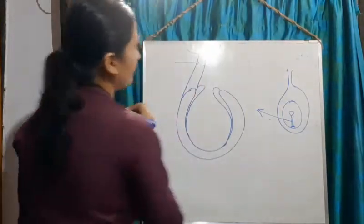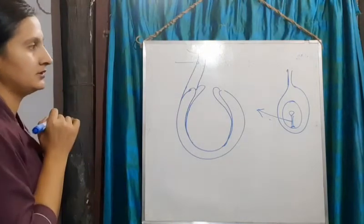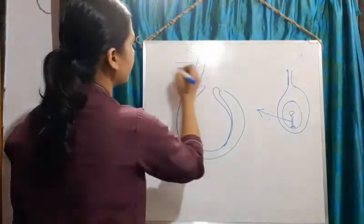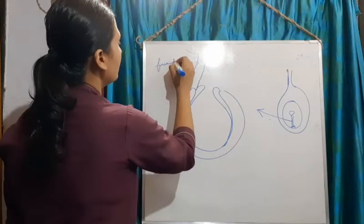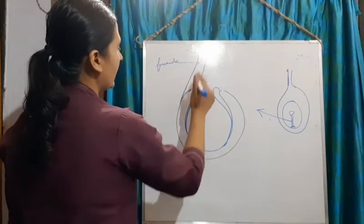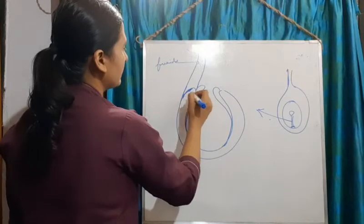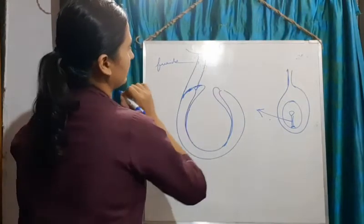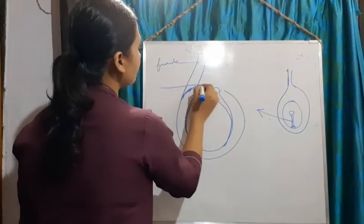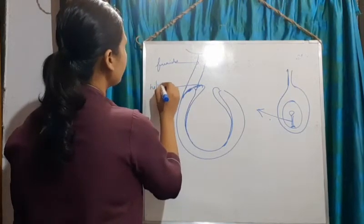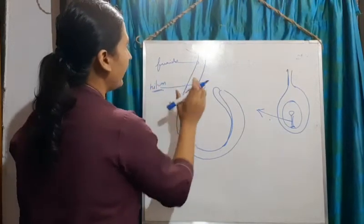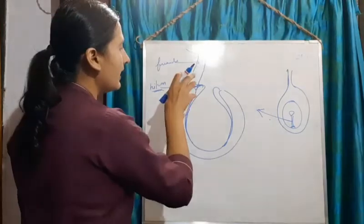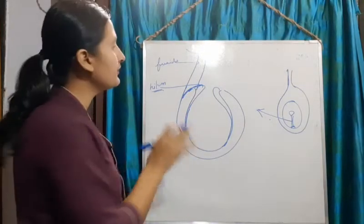The part which is attached at the top is the placenta. Then there is the funicle — the stalk that attaches this ovule to the placenta. Next is the hilum, which is the part where the funicle and the ovule are joined together.